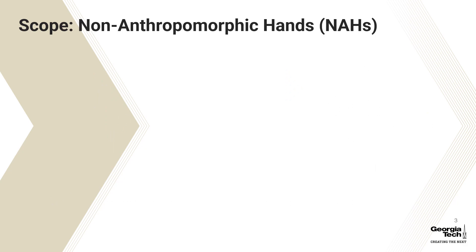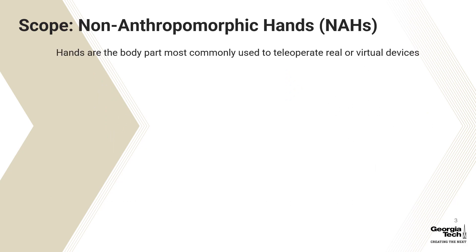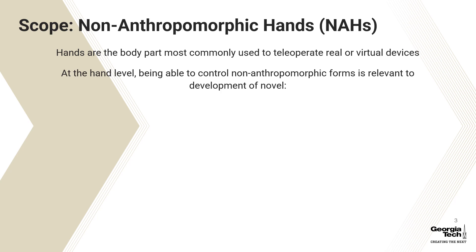In this paper, we focus on non-anthropomorphism at the hand level. Hands are a good place to start because they are both dexterous and well-characterized, and the body part most commonly used to teleoperate real or virtual devices. Even with this narrowed scope, control of non-anthropomorphic hands is a research topic immediately relevant to prosthesis design, teleoperation, and control of tools and avatars in virtual reality.